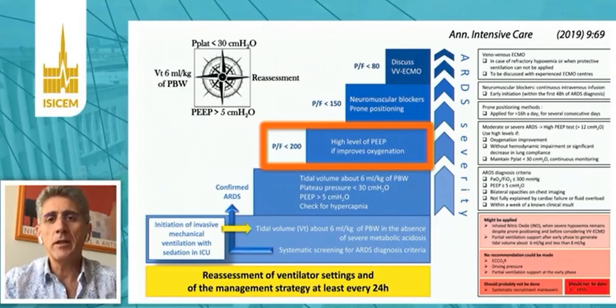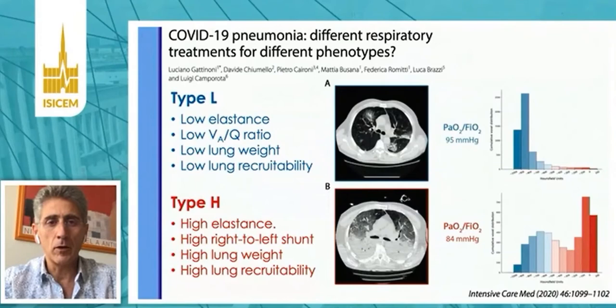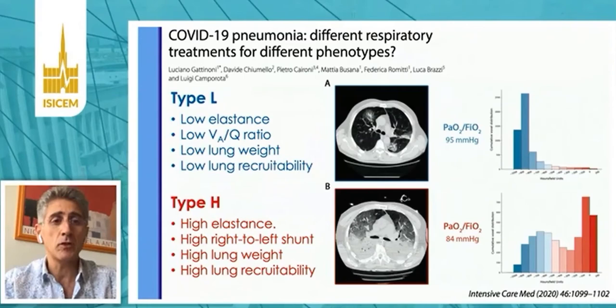Interestingly, in patients with COVID-19 pneumonia, as we've shown, you may have actually different respiratory phenotypes. If you look at these two patients, they have roughly the same PO2/FiO2 ratio. A patient depicted with a CT scanner in A is breathing spontaneously, and these patients have very low elastance, low shunt fraction, low lung flexibility, and low lung weight.